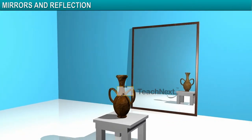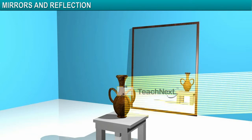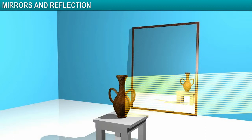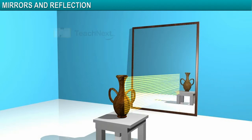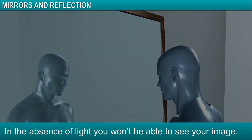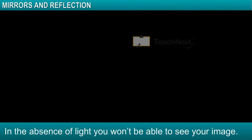Light incident on an object is reflected back by the object. That reflected light then incidents on the mirror and is reflected again. It is because of this reflection of light that we see images. In the absence of light, you won't be able to see your image. In fact, the mirror cannot show you images of any object without light.